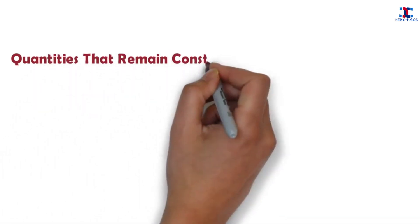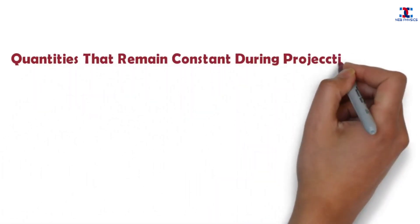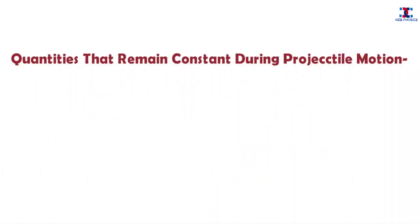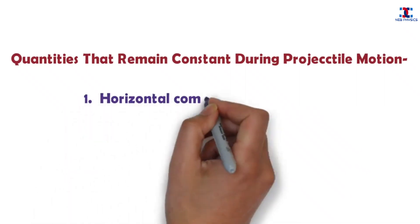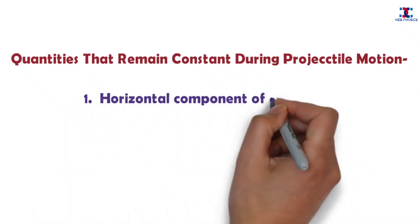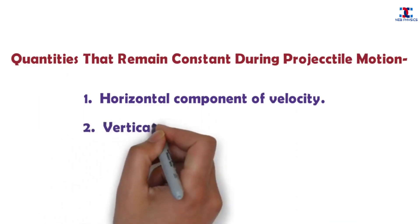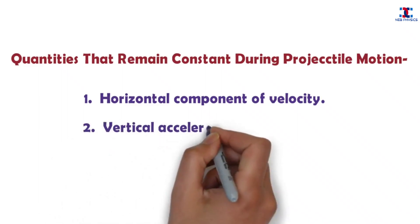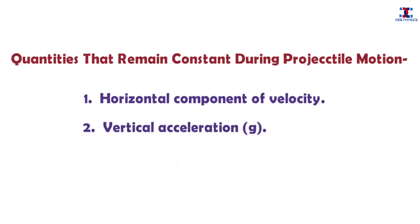There are some quantities that remain constant during projectile motion, and they are the horizontal component of velocity and the vertical acceleration, which is obviously equal to the acceleration due to gravity.